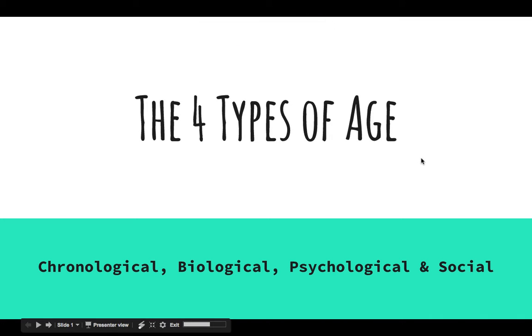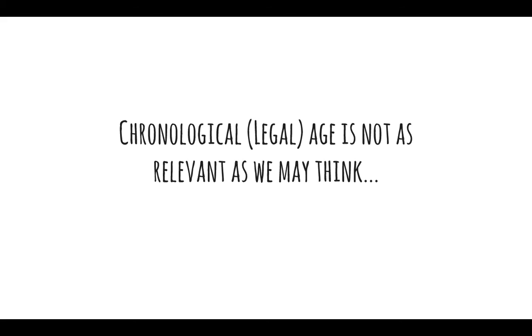In this video I'm going to talk about the four types of age: chronological, biological, psychological, and social.